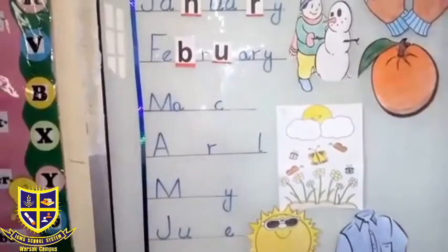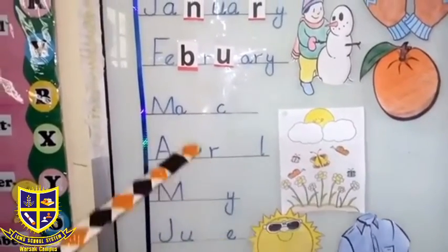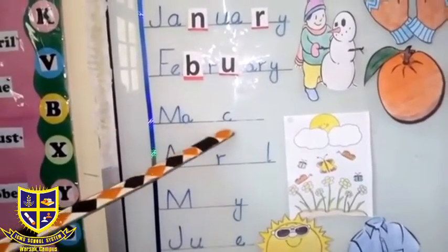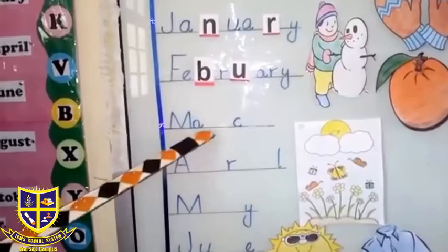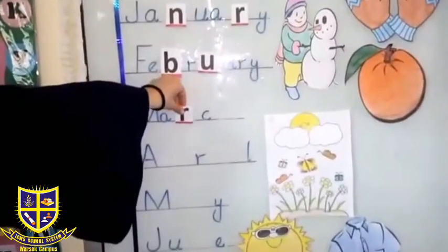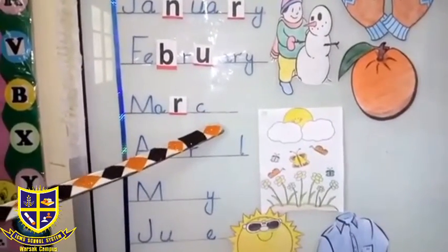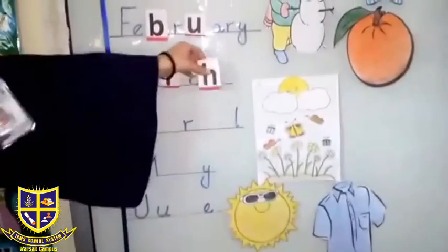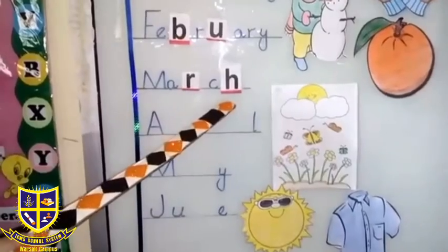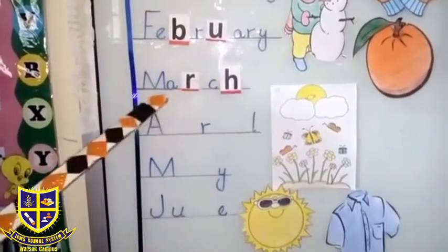Now we are on the third month which is March. This is March. March has R missing, and we will see R — this is R. Now we will paste it and you will write March. The last letter is H. Here we will write H. This is complete.